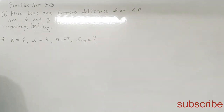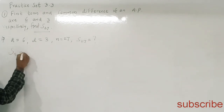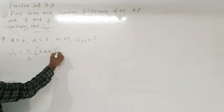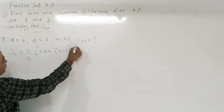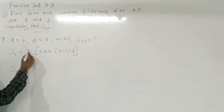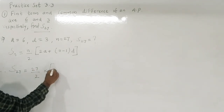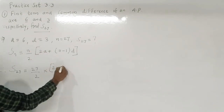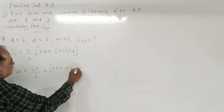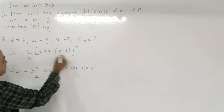We have to find the sum of first 27 terms. Using the formula, S27 = n/2 × (2a + (n−1)d). So S27 = 27/2 × (2×6 + (27−1) × 3).